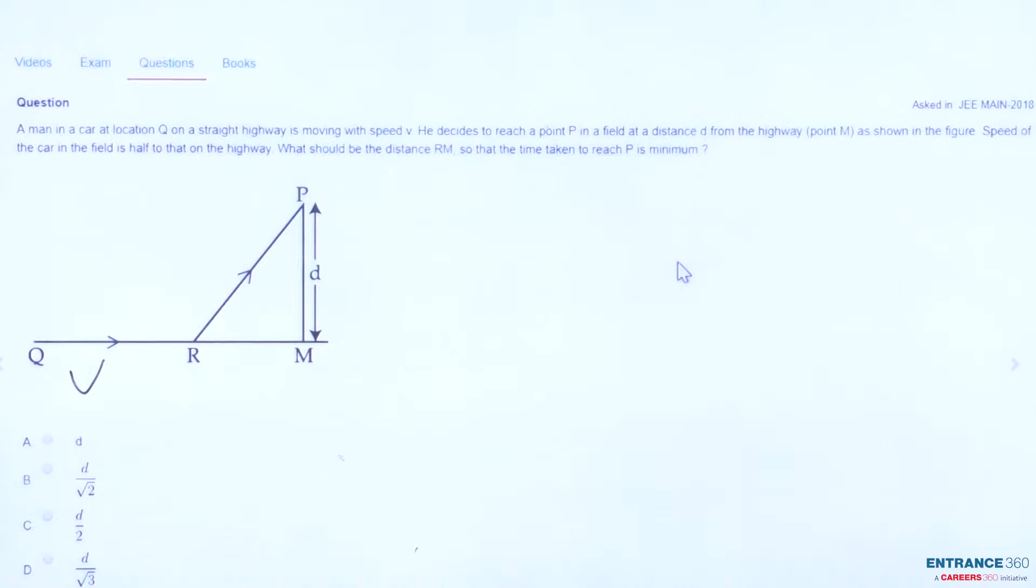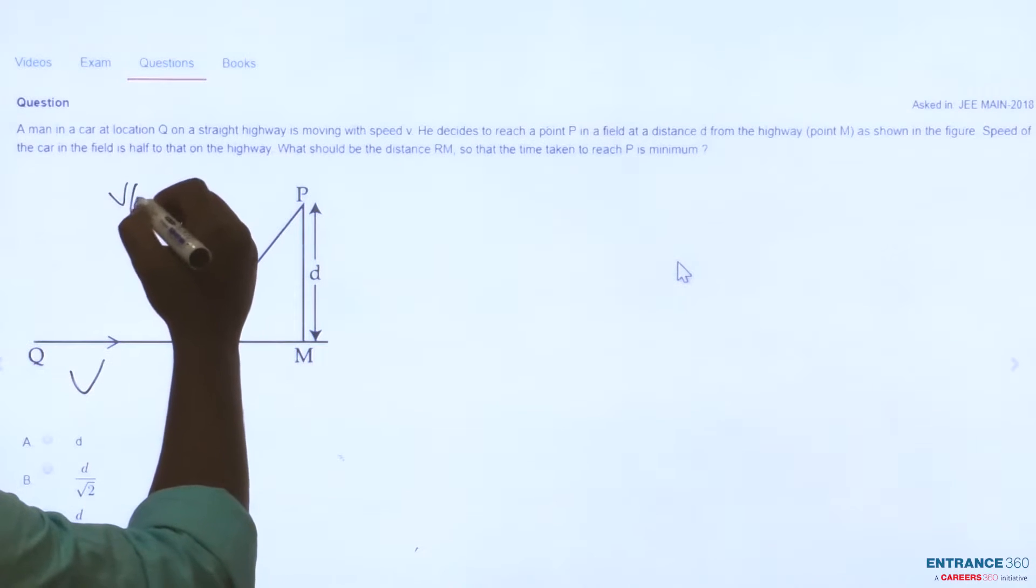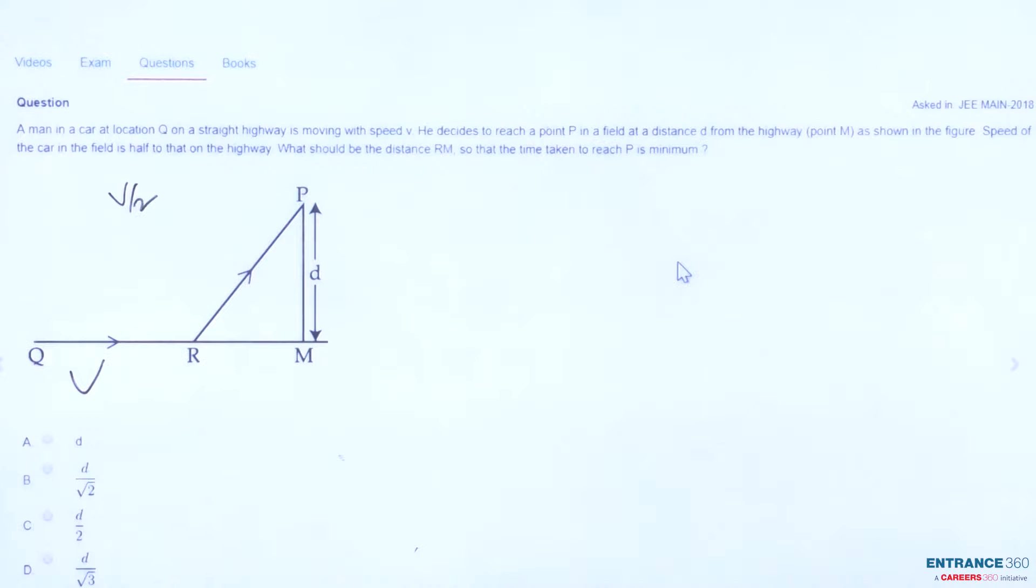The speed for the path RP was equal to V/2. The question asks us to find the value of RM such that the time taken to reach point P is minimum. Here are the four options.